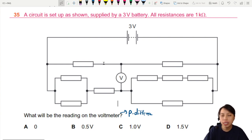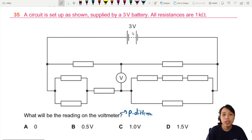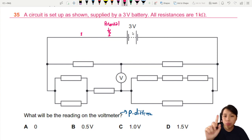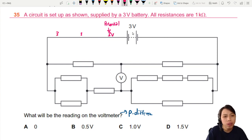Think of the circuit in loops that you can draw. Starting from the battery, you travel down the battery — maybe here 3 volts. This pink color that I'm drawing is potential, not potential difference. Just potential — like height versus height difference.